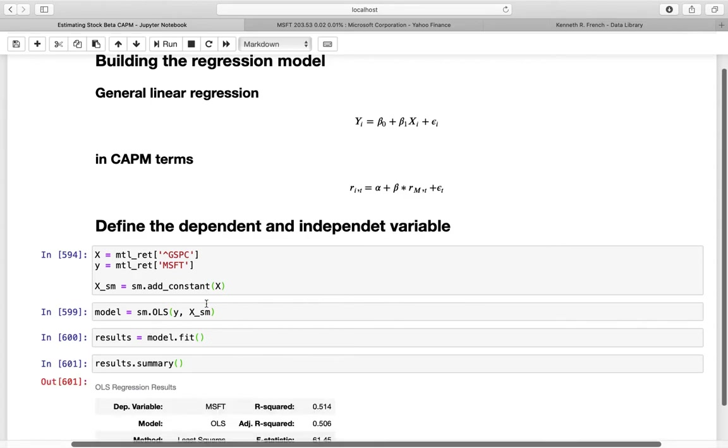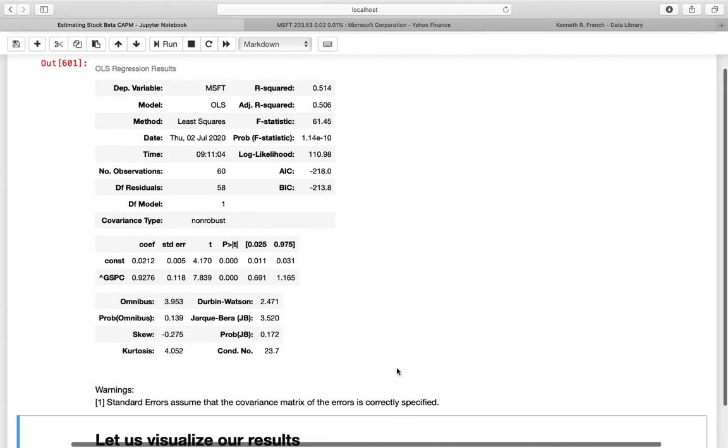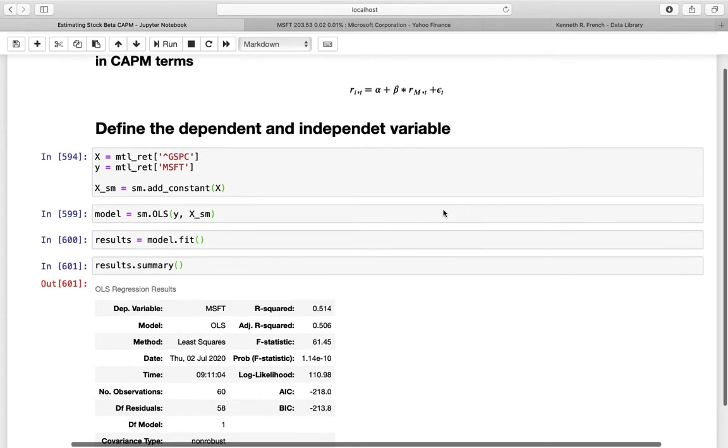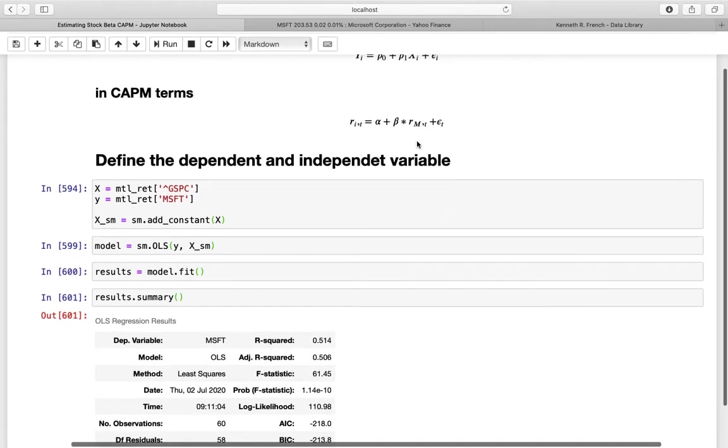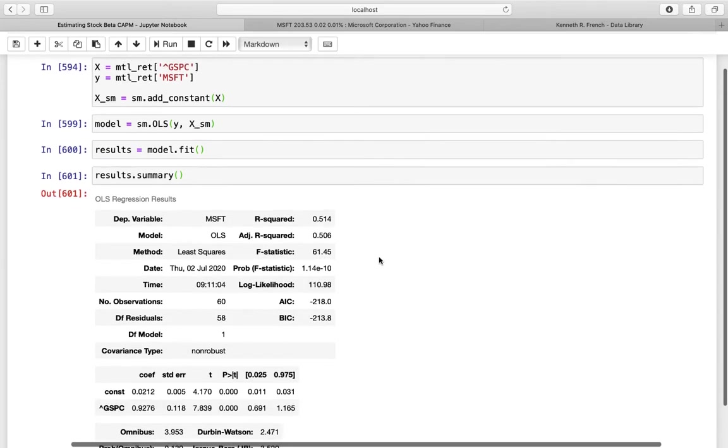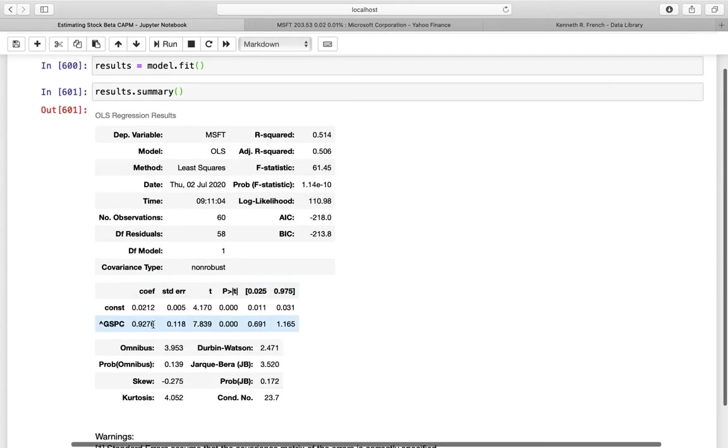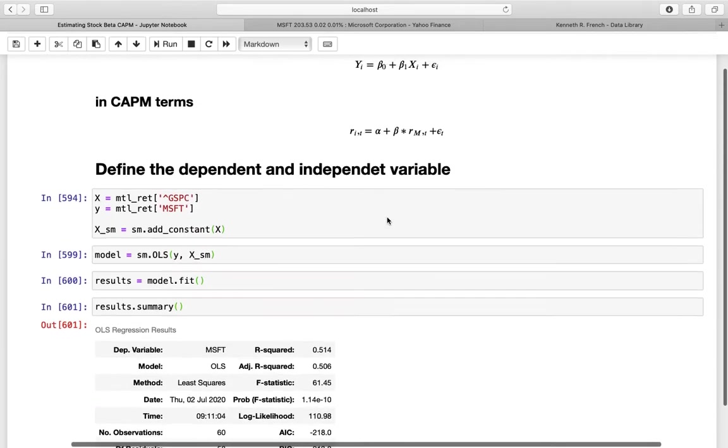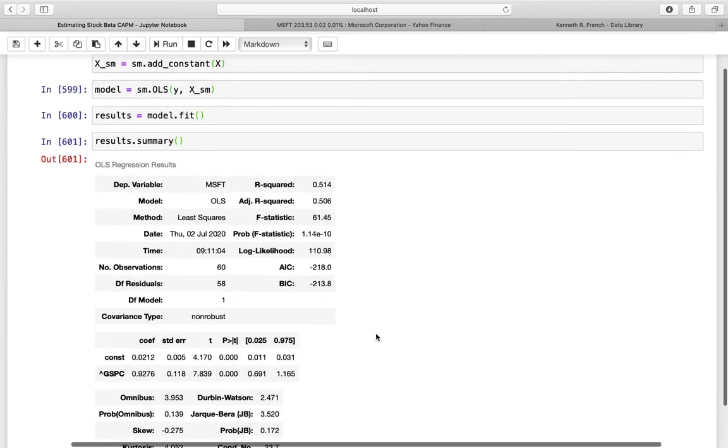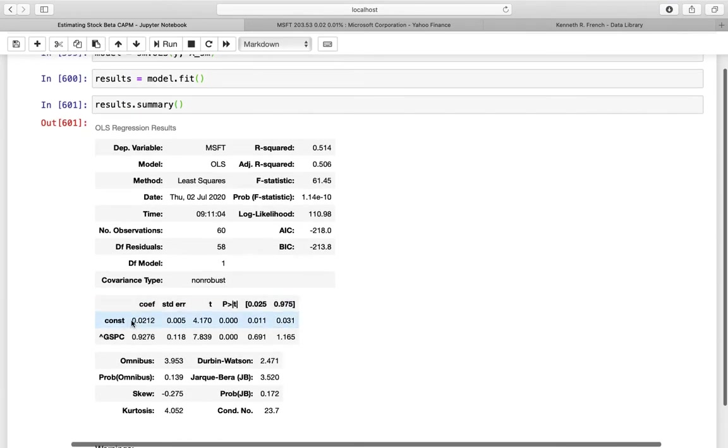And what we are getting now is this table. What is relevant for us now in this table are those two coefficients. And this coefficient here, 0.93, is our market return coefficient, the beta. And we are interested in this one here. We want to estimate this one, the beta. And this is nothing else than this coefficient again of 0.93. And our alpha, which is our intercept here, is nothing else than the coefficient of this constant here. So again, the alpha of Microsoft is 0.02 and the beta of Microsoft is 0.93.